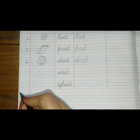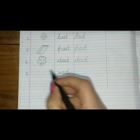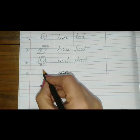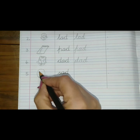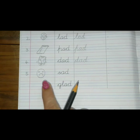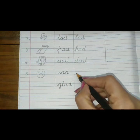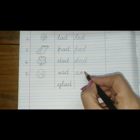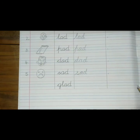Number five — 'sad'. Let's make a round circle — we will make a sad smiley. This smiley is sad. Let's write: S, A, D — sad. Here, you are going to write yourself.